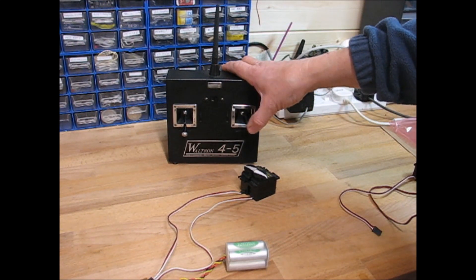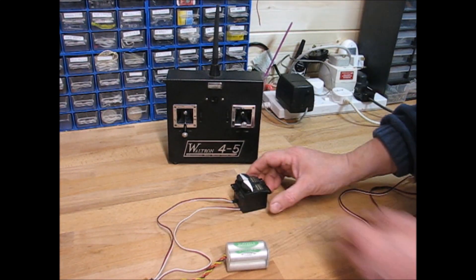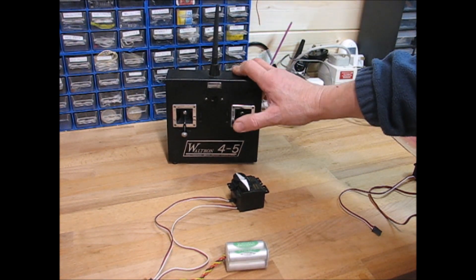And contrary to what you think, of course it's the elevator servos that are in opposition, not the ailerons, because the servos are physically mounted in opposition. So ailerons are in unison, elevators in opposition.